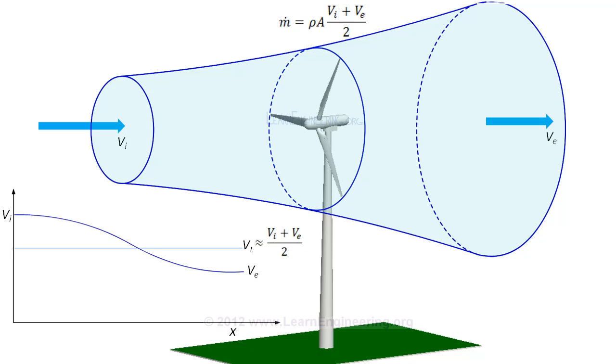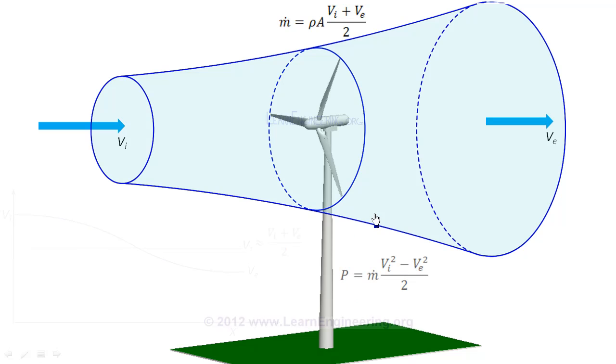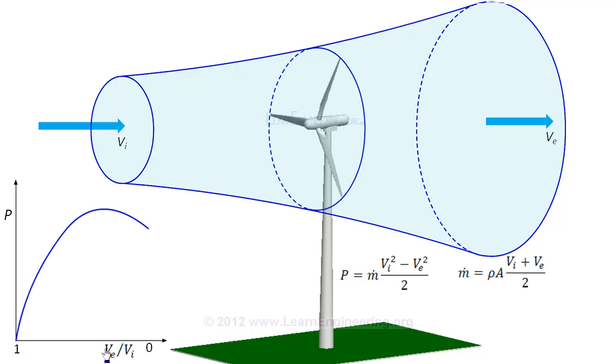Power extracted by the wind turbine is same as decrease in kinetic energy from inlet to outlet. So wind turbine can extract maximum energy when the product of these two terms is maximum. Power extracted will vary like this with ratio of exit to inlet velocity, and will have a maximum value when exit velocity is one-third of inlet velocity.